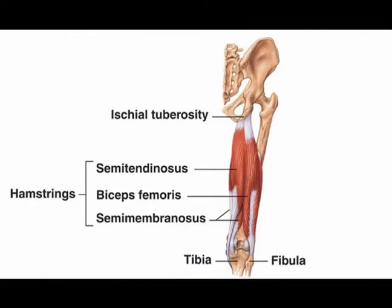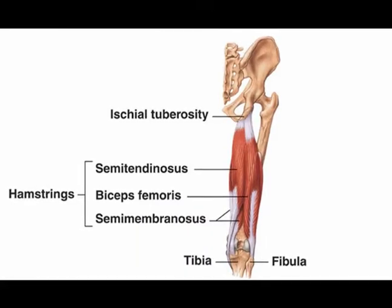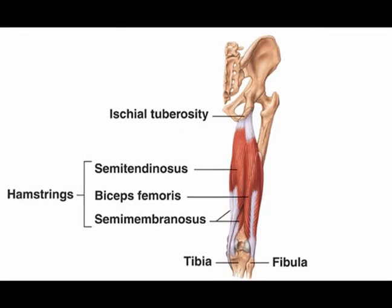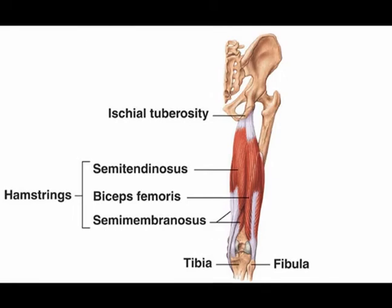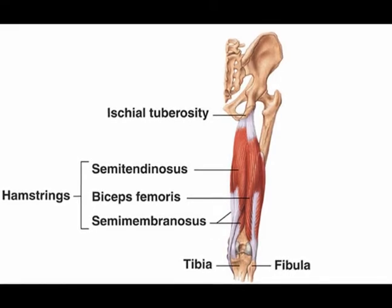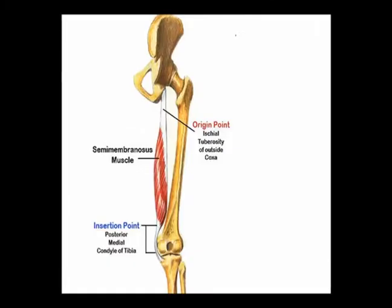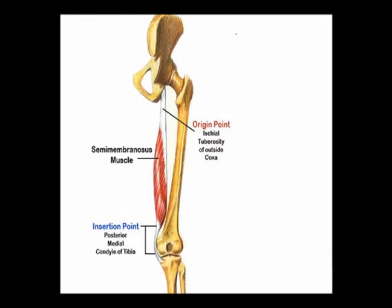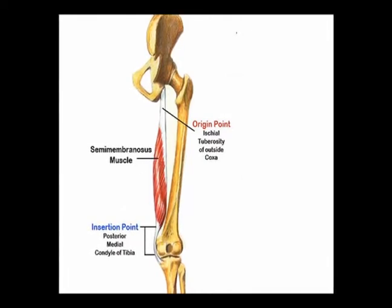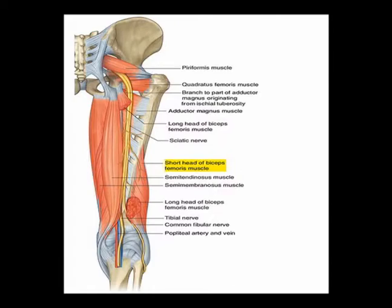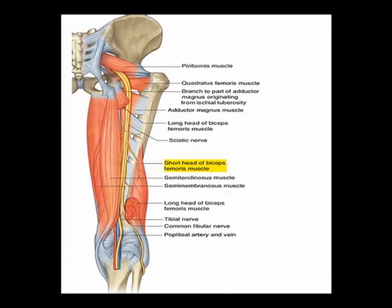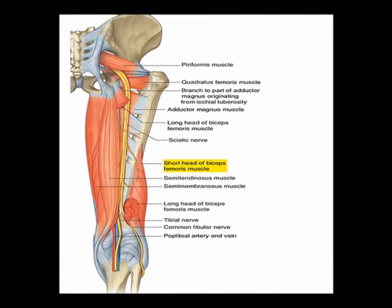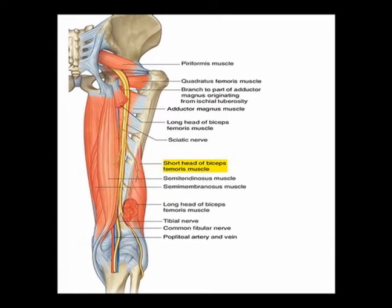The semimembranosus muscle is a medial hamstring muscle located on the posterior thigh. It crosses two joints — the hip joint and the knee joint. The origin is the ischial tuberosity. The insertion is the medial condyle of the tibia. The innervation is the tibial nerve, which is a branch of the sciatic nerve, vertebral levels L5, S1, and S2.